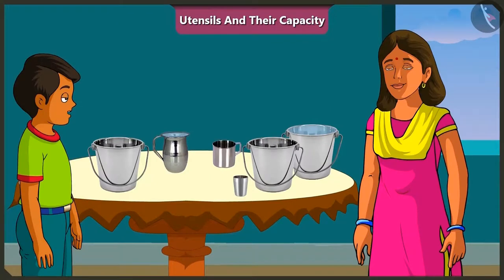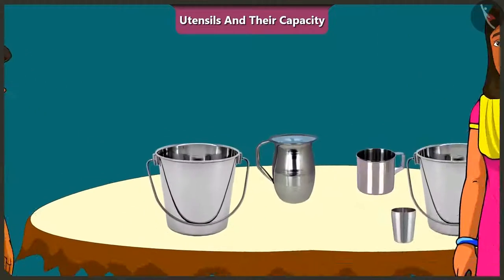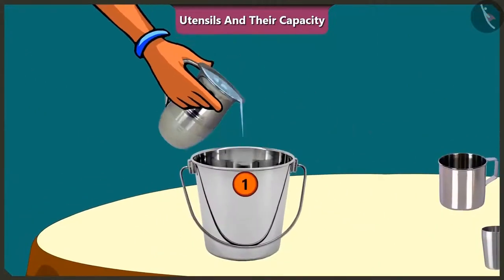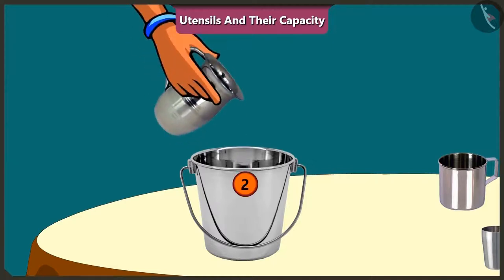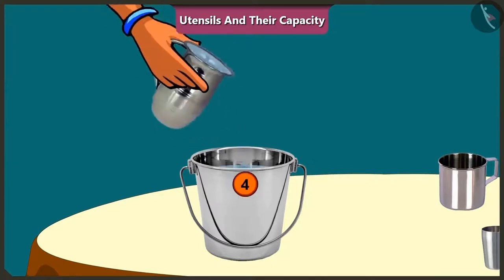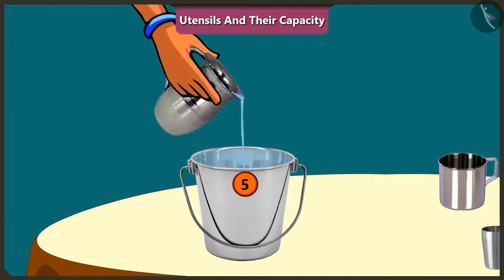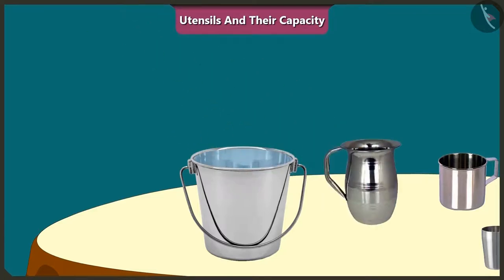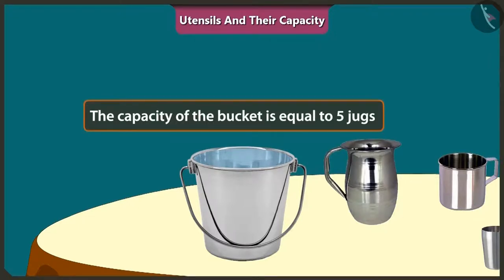Let's try filling this bucket with this jug. One, two, three, four, five — the whole bucket got filled with just 5 jugs of water. This means the capacity of this bucket is equal to 5 jugs of water.